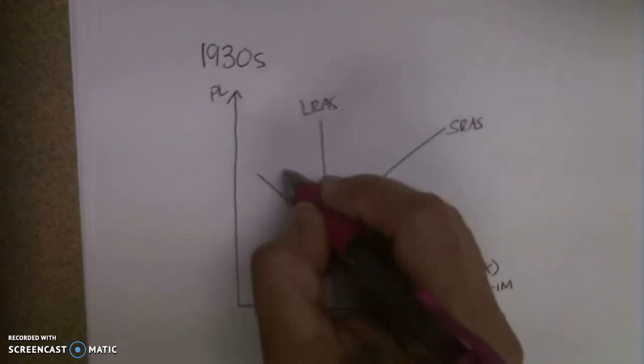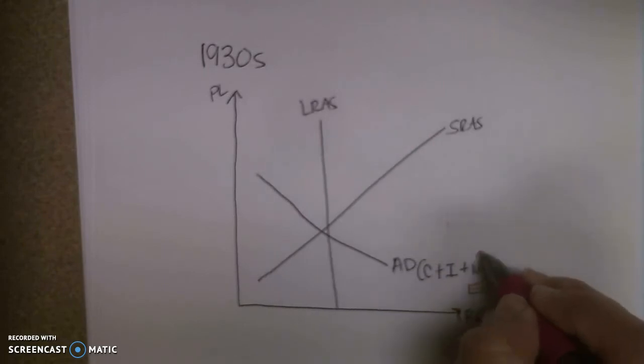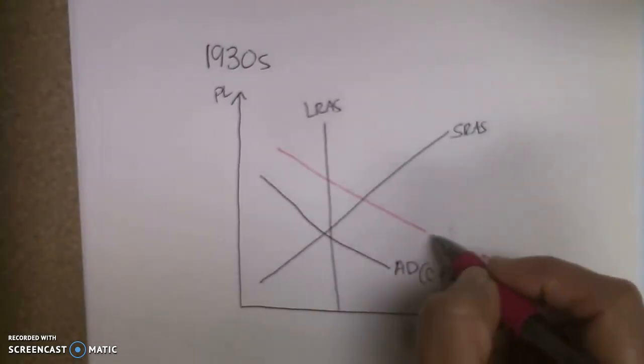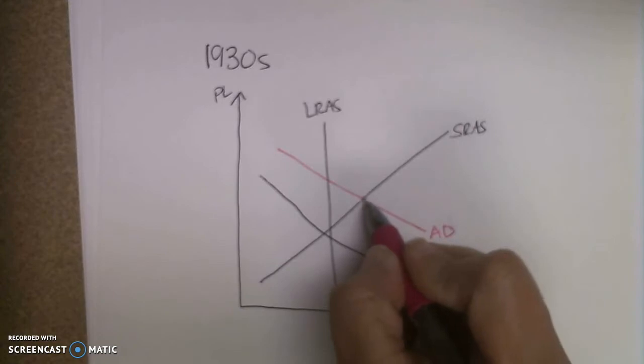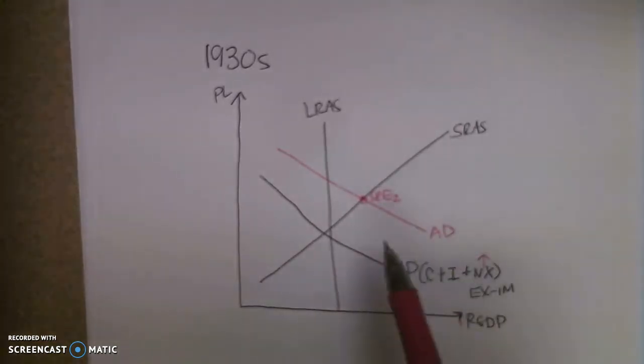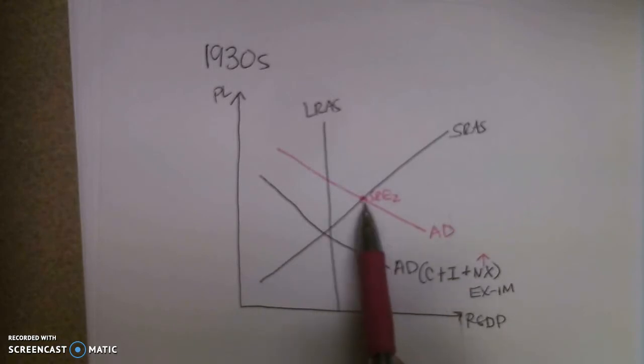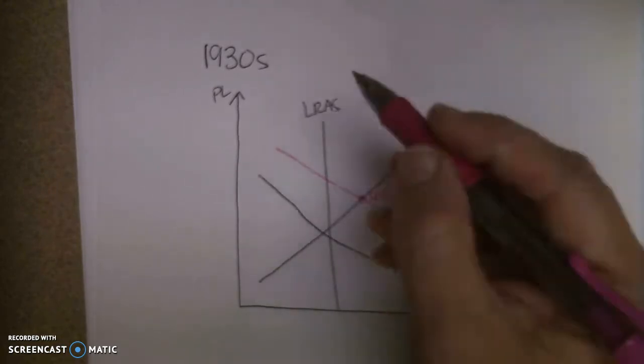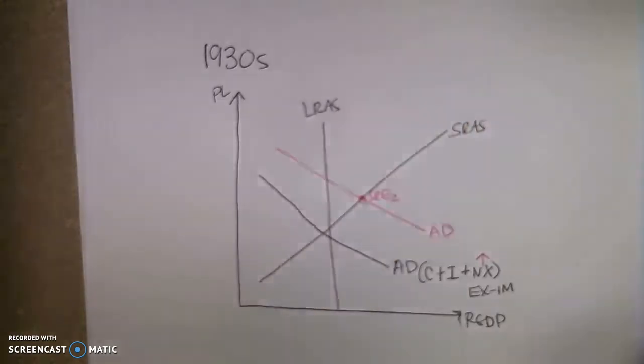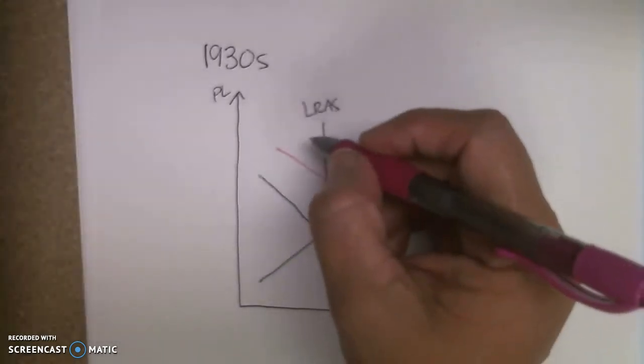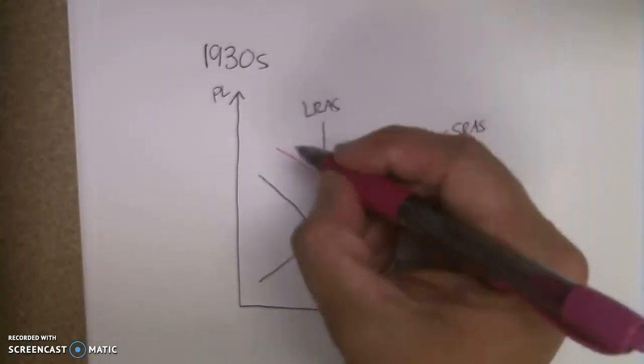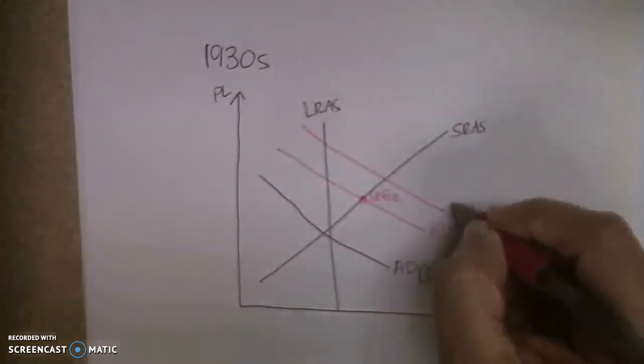But then we started rebuilding Europe. And as we did, net exports increased and moved to the right. Now, look where our new short run equilibrium is. So all of a sudden, we jump from a slight recessionary gap into an inflationary gap. And this is happening in the late 20s, early 30s. And as we needed to rebuild Europe, they not only needed raw materials, wood, things like that to build, but they also needed food.